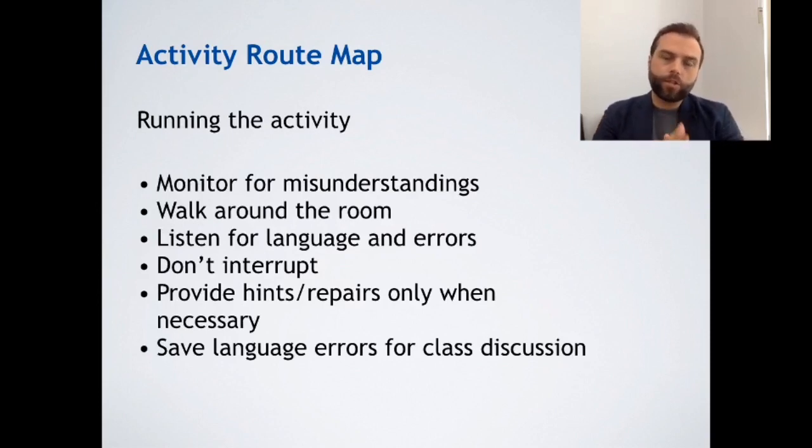Next, running the activity. Now you've set up the activity, students are getting involved now, students are doing something. So what do you need to do? Monitor for misunderstandings. You need to be walking around, kind of listening and checking. Walk around the room, listen for language and errors. Try to get a sense of any errors, but also good language that's being used as well. Don't interrupt though. If you set up the activity well, you shouldn't need to interrupt the students. Now is the time for the students to communicate. Try and get all of the information out in the setting up stage. Don't forget to mention something. Provide hints and repairs only when necessary. Any language errors, you should save for class discussion. Don't stop the students if you can help it. If you do hear language errors, save them for later. That's running an activity.